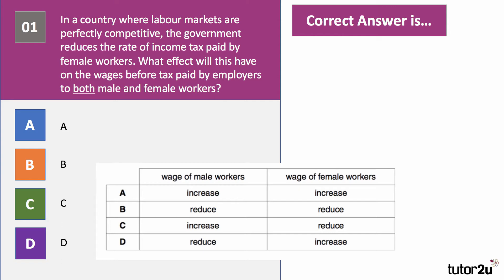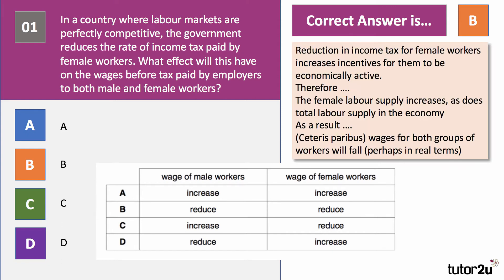The correct response is B. Wages of male and female workers can both be expected to fall. The key is to understand the impact of the tax cut on the aggregate supply of labour in the economy. A fall in income tax for female workers increases the incentives for them to be economically active in the labour market. Therefore, other things remaining the same, female labour supply increases, as will the total labour supply in the economy. As a consequence, ceteris paribus, wages for both groups of workers will fall, perhaps in real terms, because the aggregate labour supply has increased — there's more competition of people for jobs.